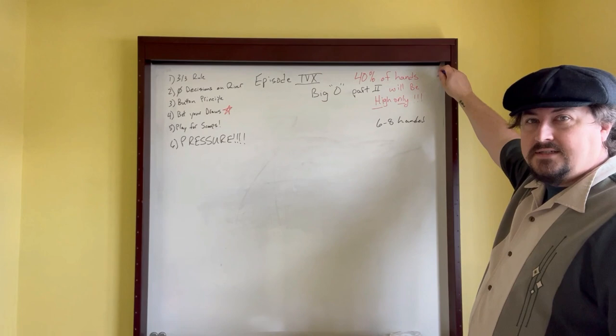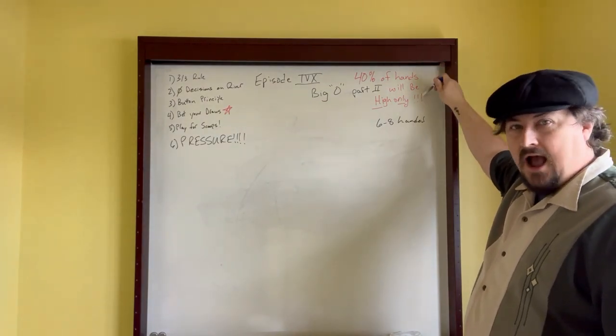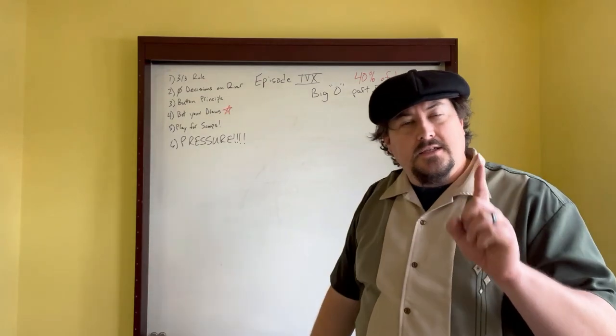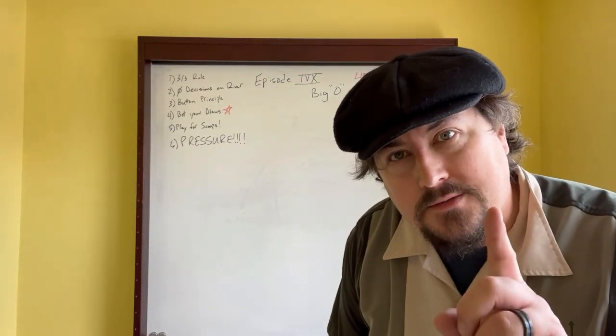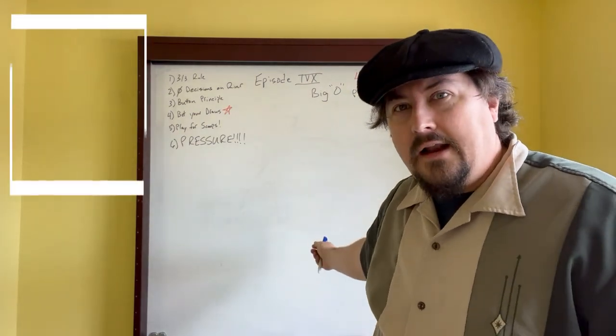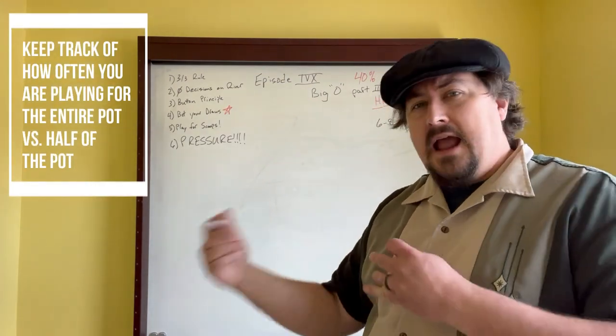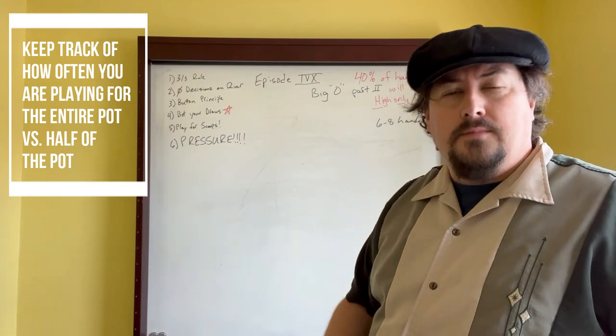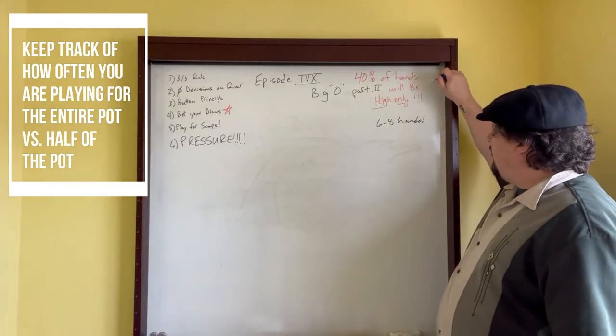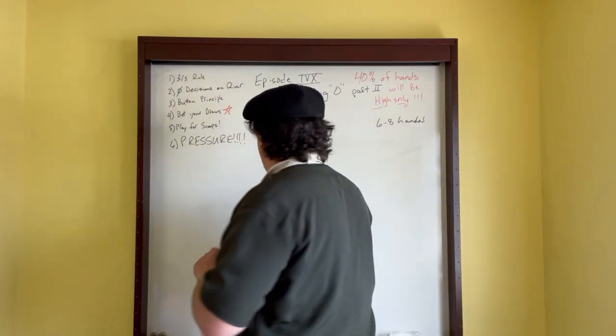If people are a little passive or nitty, a lot of times the hand is going to brick out and there's only going to be a high hand. Keep in mind, 40% of the time in Big O is only high. This is a huge leak. A lot of players' mistake is they're always drawing to the low but they forget about the high.